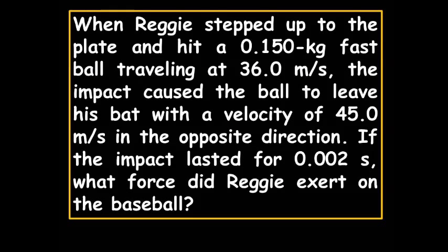When Reggie stepped up to the plate and hit a 0.150 kilogram fastball traveling at 36.0 meters per second, the impact caused the ball to leave his bat with a velocity of 45.0 meters per second in the opposite direction. If the impact lasted for 0.002 seconds, what force did Reggie exert on the baseball?